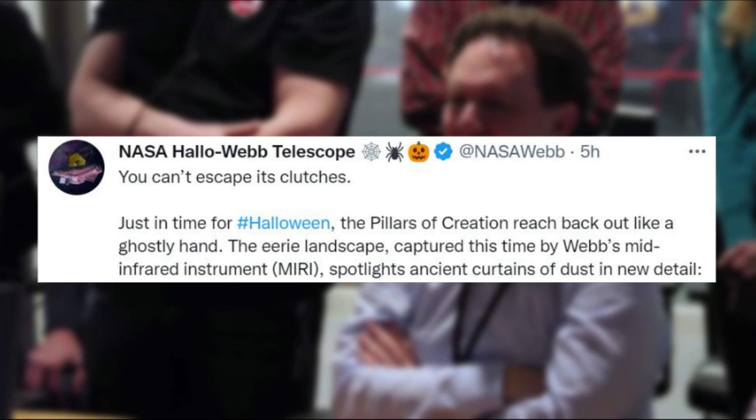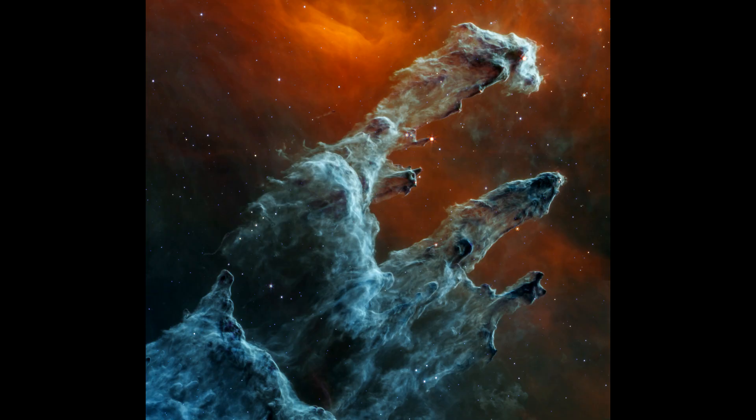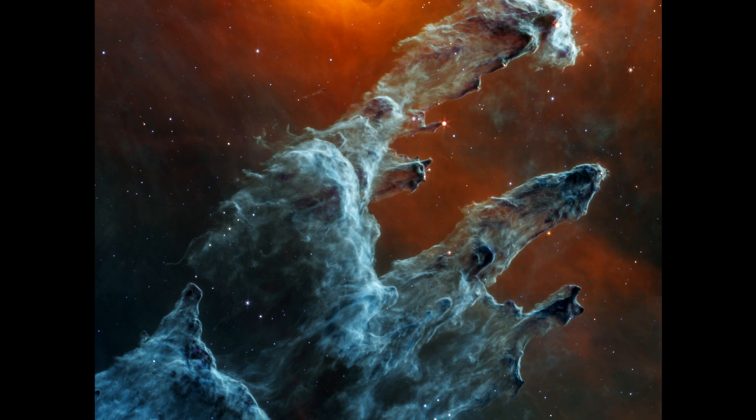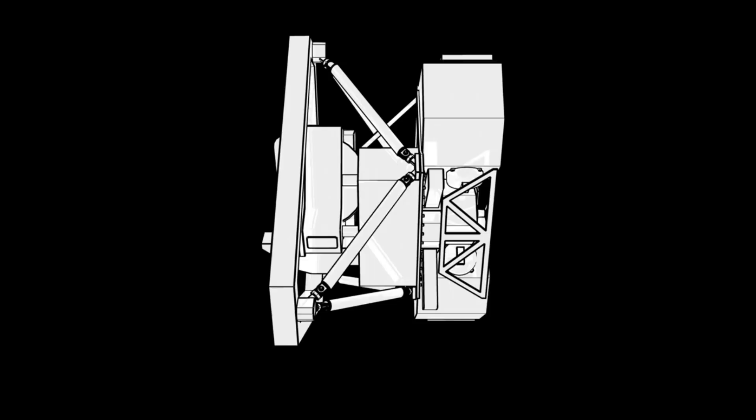NASA's James Webb Space Telescope's mid-infrared view of the Pillars of Creation strikes a chilling tone. Thousands of stars that exist in this region seem to disappear, since stars typically do not emit much mid-infrared light, and seemingly endless layers of gas and dust become the centerpiece. The detection of dust by Webb's mid-infrared instrument is extremely important. Dust is a major ingredient for star formation.